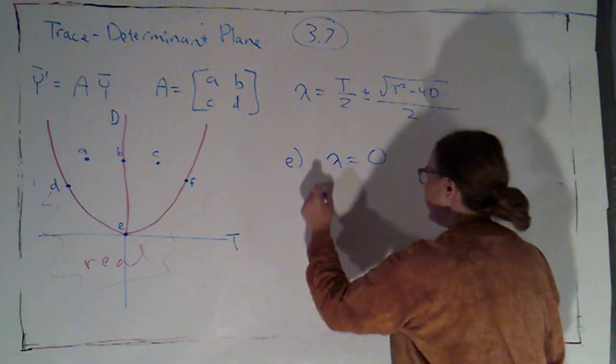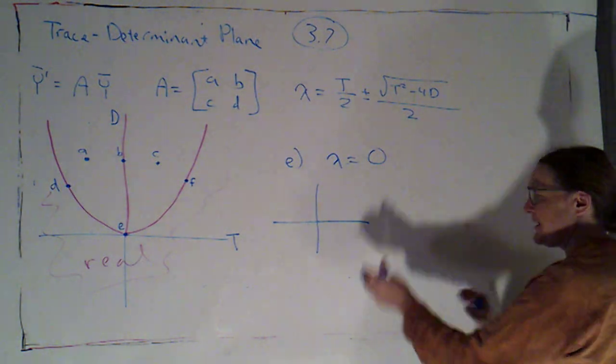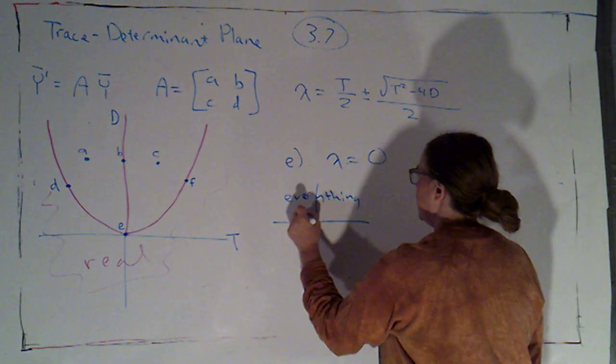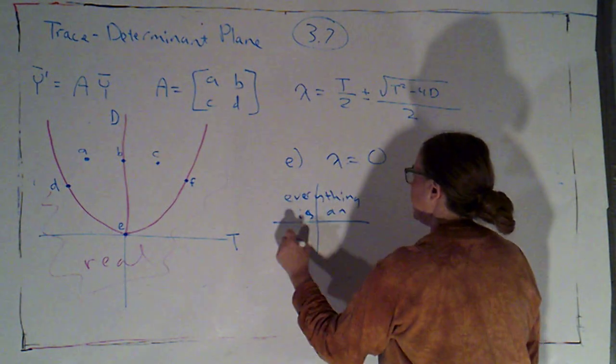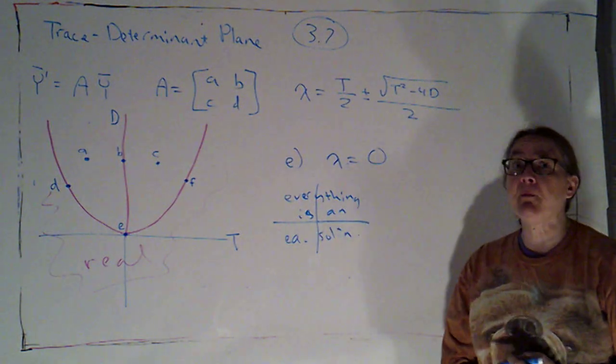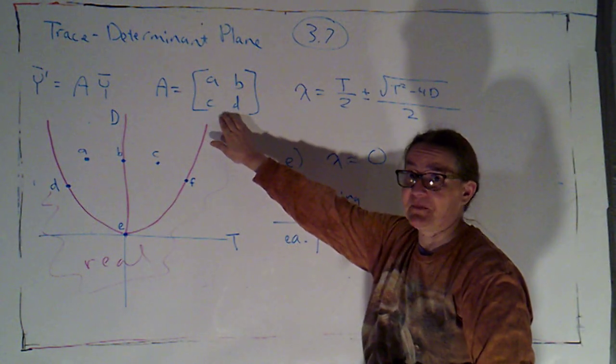So, I could have a phase portrait that I can't really draw. I'm just going to write in words. Everything is an equilibrium solution. This is incredibly boring. This would be what we have if the matrix was 0.